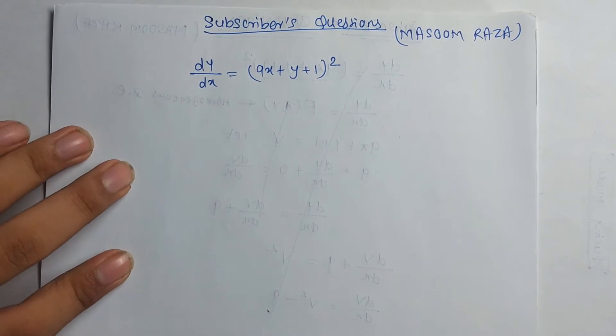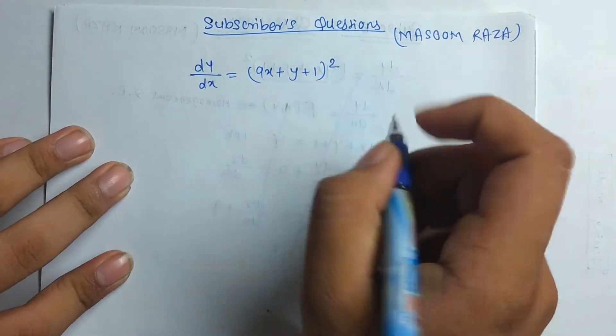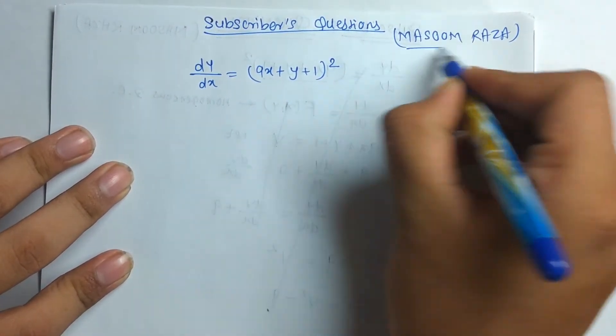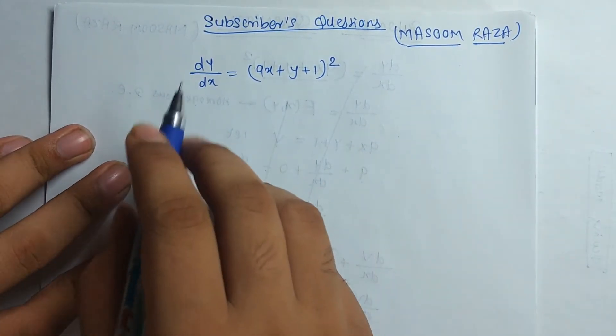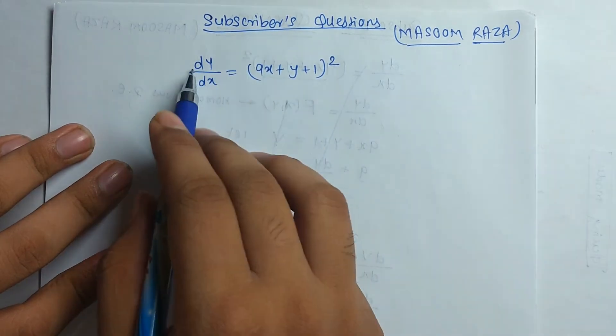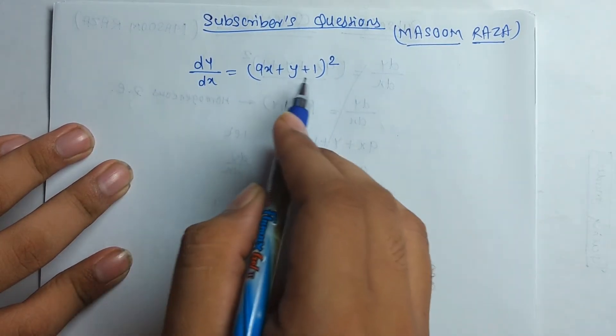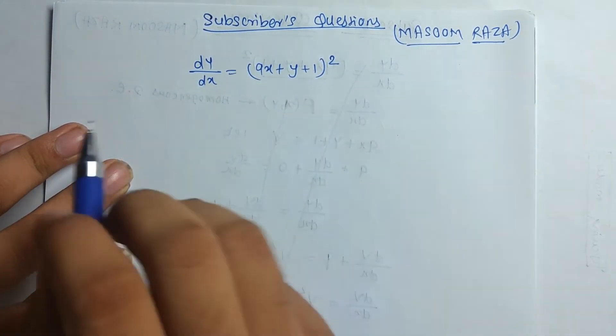Today we are going to solve this subscriber's question. One of my subscribers, Masoom Raza, asked me a question about differential equation. He asked me to solve the equation for him. That is dy by dx is equal to 9x plus y plus 1 the whole square.